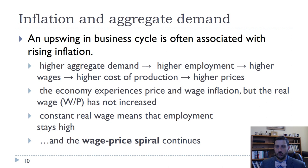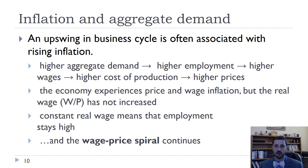Higher aggregate demand leads to more employment — firms are producing more, so they need more workers, and they need to pay higher wages. That leads to higher costs of production and, given a fixed markup, higher prices — price and wage inflation. But the real wage has not increased, because if your wage goes up by 5% but the price level goes up by 5%, then your real wage hasn't gone up. Keep in mind that higher unexpected inflation helps borrowers by decreasing the value of their debt, but hurts lenders.